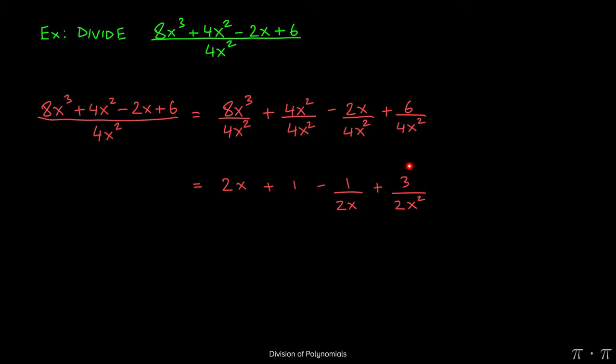Lastly, 6 divided by 4 reduces to 3 divided by 2. There are no x's in the numerator to divide out or cancel with x squared on the denominator, so that stays as it is.